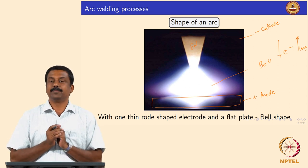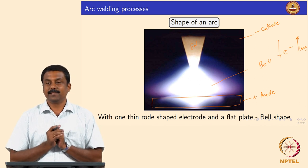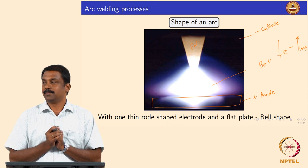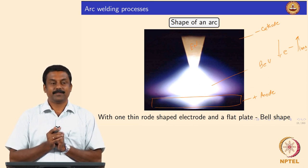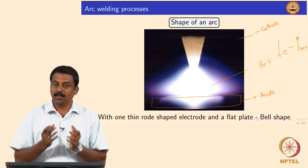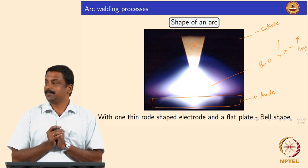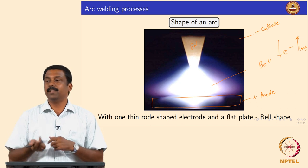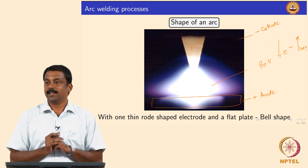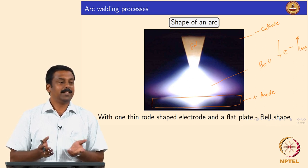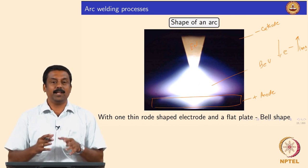So with electrode negative, the temperature would be high in the workpiece. If you are using a non-consumable electrode — meaning the electrode is not melting — it is always advisable to make that electrode negative, so electrons are emitted from the electrode and sent to the workpiece, raising the workpiece temperature. If you reverse the polarity, electrons will reach the electrode, which is not good for a non-consumable electrode — you end up eroding it much faster.